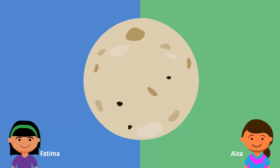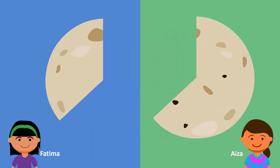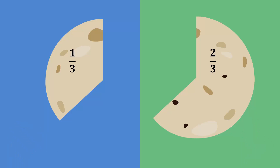Suppose two friends, Fatima and Aiza, want to share one roti. They tear it into two unequal pieces so that Fatima gets one third of the roti and Aiza gets the rest. Observe that these numbers are not integers. So, how do we define such numbers?